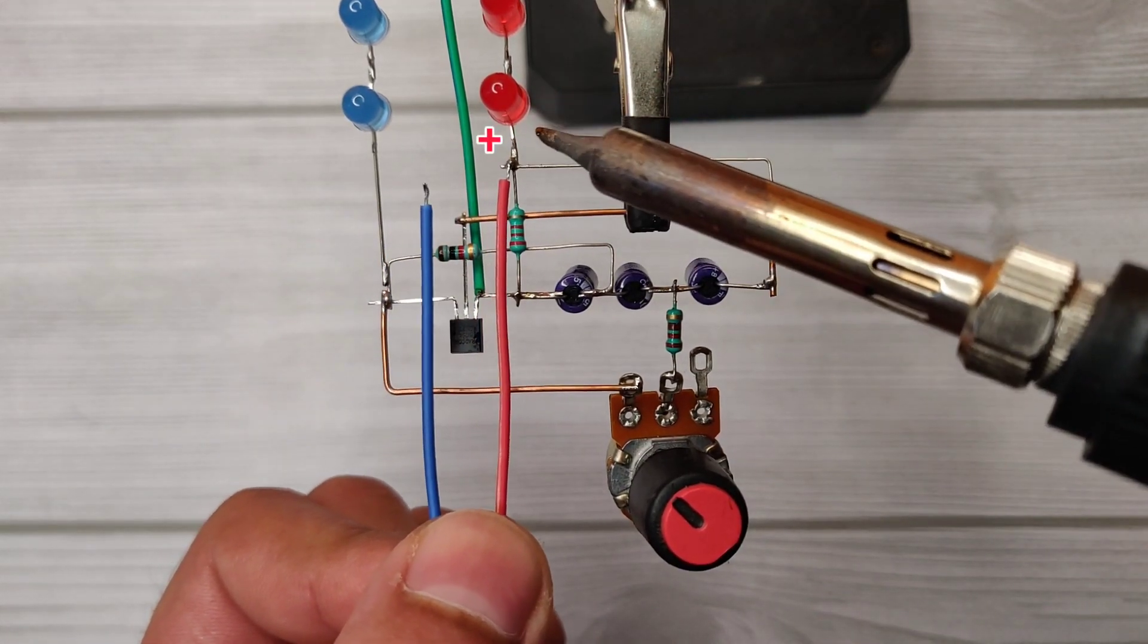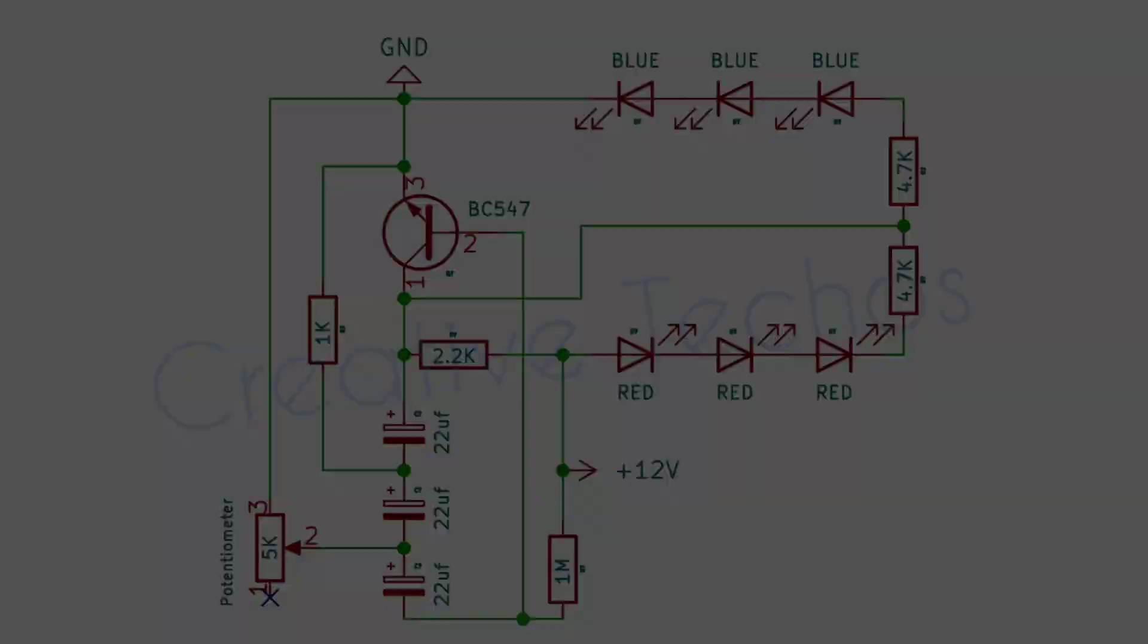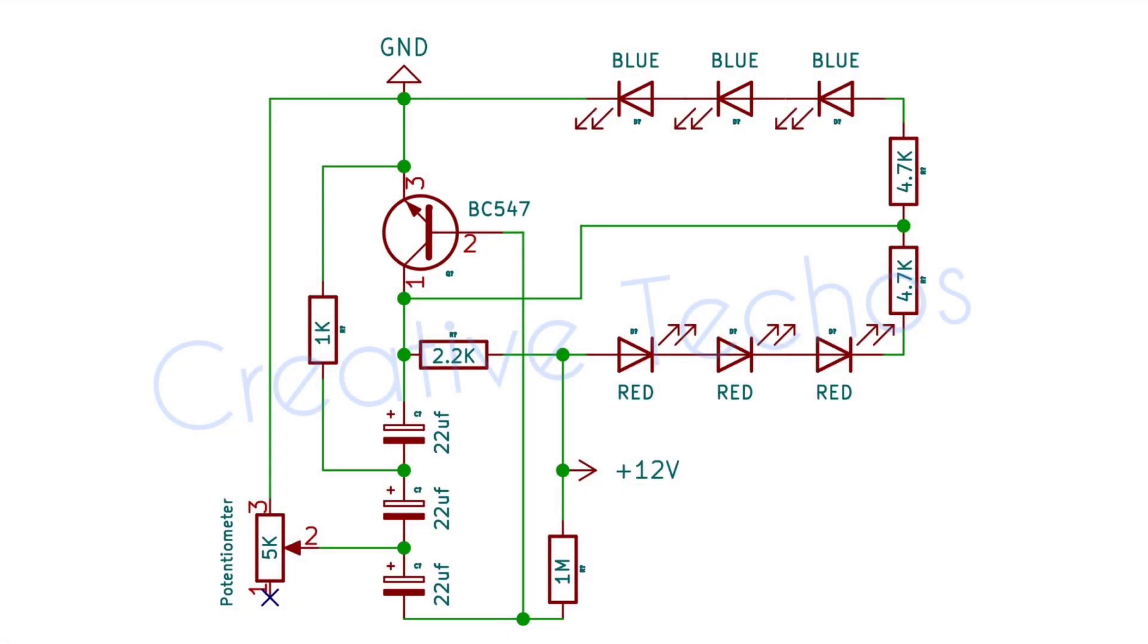Now solder the positive wire on the 2.2k resistor and the negative wire on the emitter of the transistor. Here is the circuit diagram, download link is in the description.